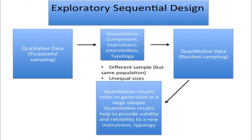The third basic design, exploratory sequential design, uses a slightly different procedure on sampling. This design is one where researchers begin qualitatively with a purposeful sample. They then create something quantitatively oriented, like a new instrument, materials for an intervention, or a typology. They then administer that quantitative component to a random sample of a population. In this case, where the qualitative is building to quantitative, it's not essential that the same people appear in both samples — in fact, it's often not the case. Because the qualitative sample is very small and the quantitative is quite large, the people are going to differ. So we see unequal sample sizes and different samples being used in the qualitative and quantitative aspects of this design.